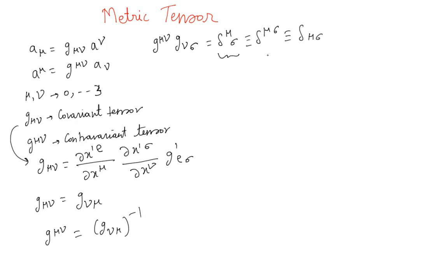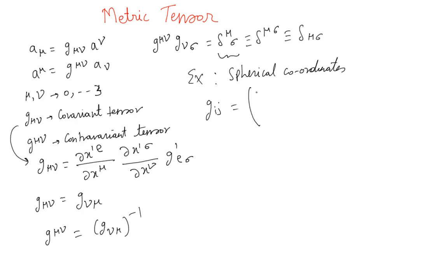Let's consider an example. For curvilinear coordinates, let's take spherical coordinates. For spherical coordinates, G_ij — using i, j since I'm talking about 3 dimensions — is given as the diagonal matrix: 1, 0, 0; 0, R², 0; 0, 0, R² sin²(theta).